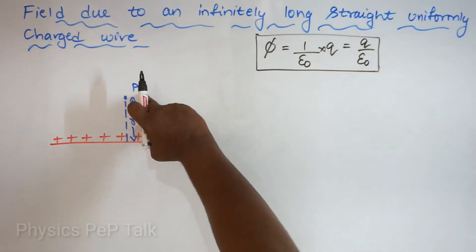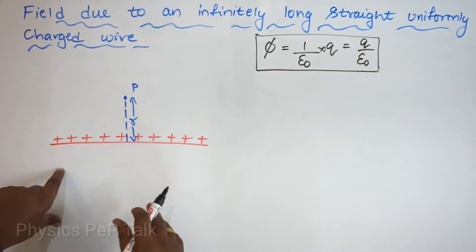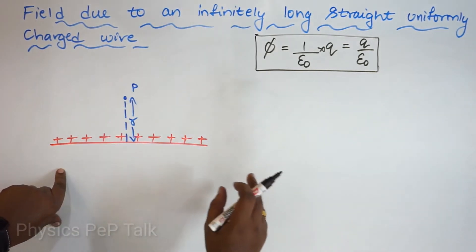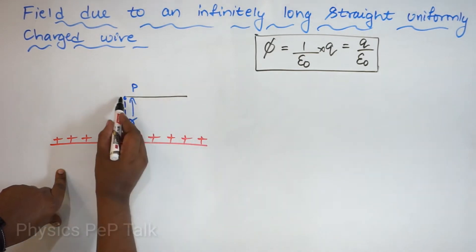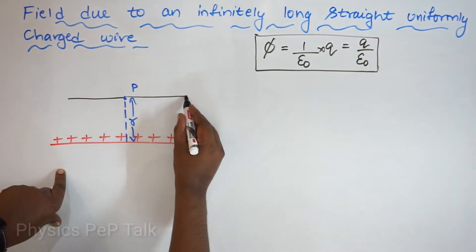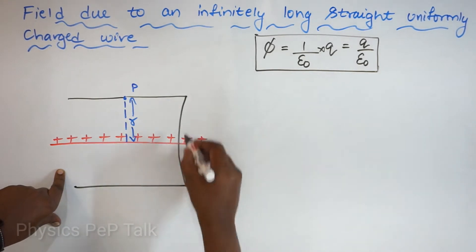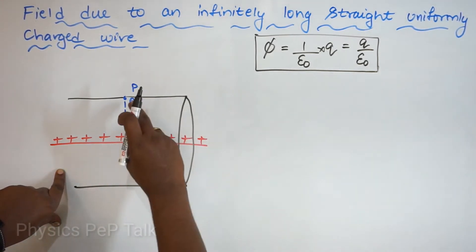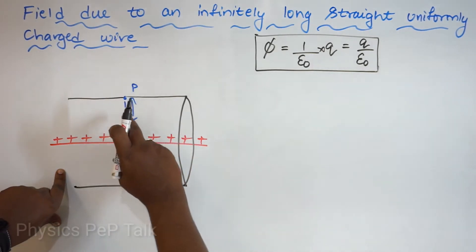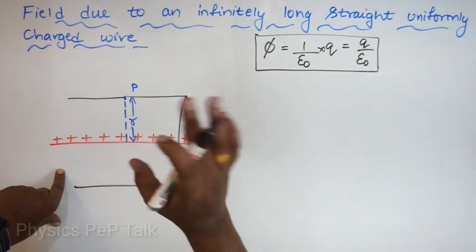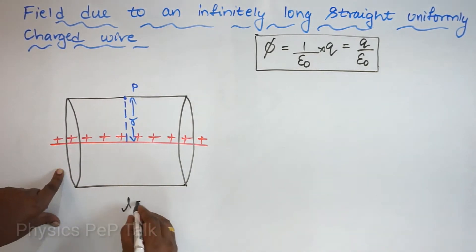Point P is just a point, so I should consider that this point P lies on a surface. I will consider an imaginary cylinder around this wire, in such a way that the distance of separation between P and the wire becomes the radius R of this cylinder. Let this cylinder be of length L.